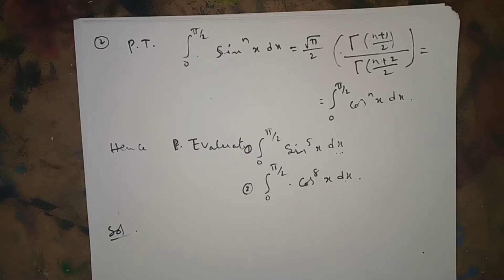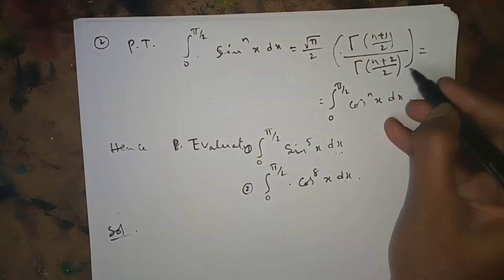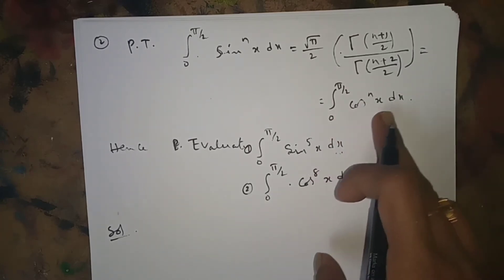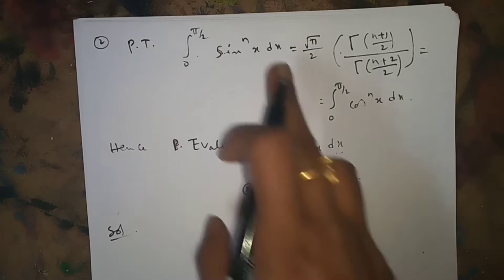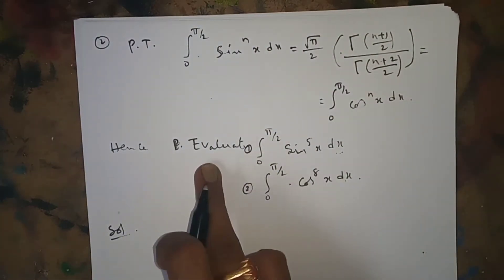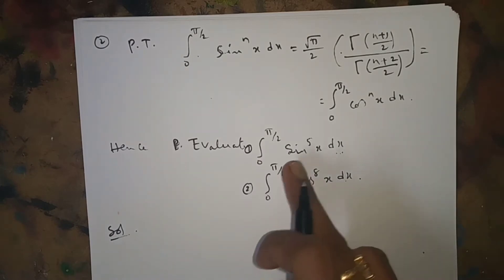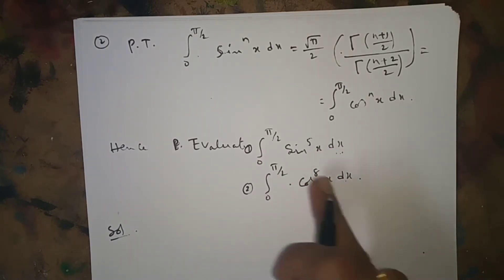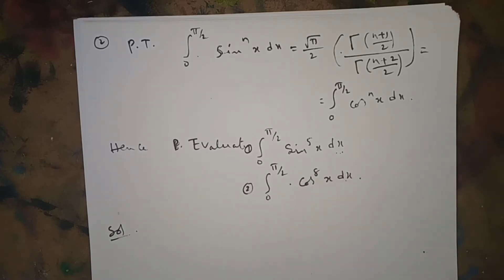Hello everyone. The next problem is: integral from 0 to π/2 of sin^n(x) dx is equal to √π/2 · Γ((n+1)/2) / Γ((n+2)/2), and that equals integral from 0 to π/2 of cos^n(x) dx. This is what we have to prove. From this, we also have to evaluate integral of sin^5(x) dx and integral of cos^8(x) dx from 0 to π/2.